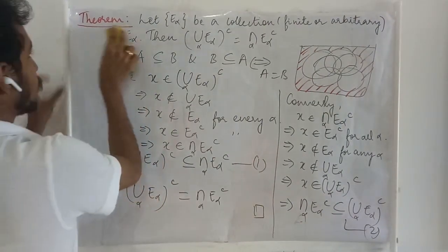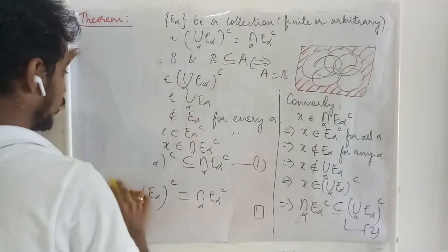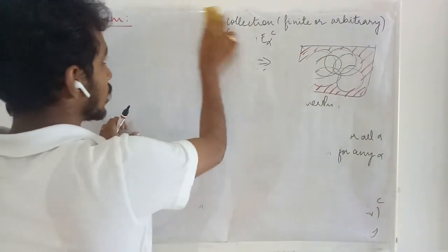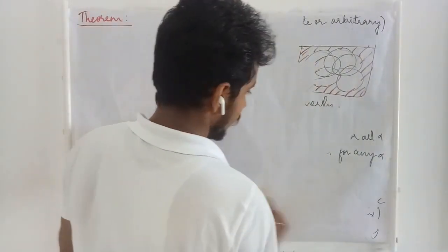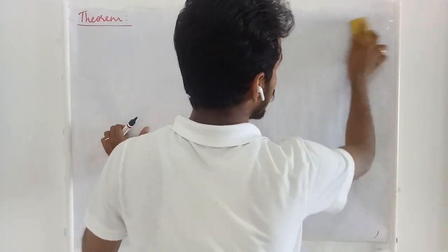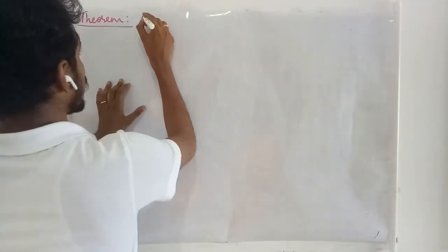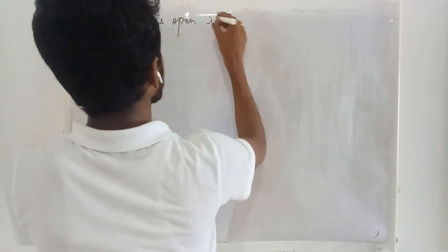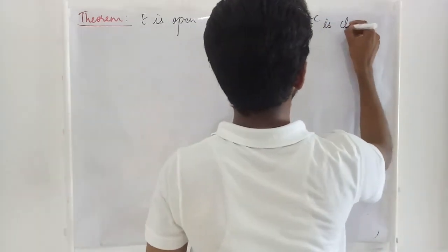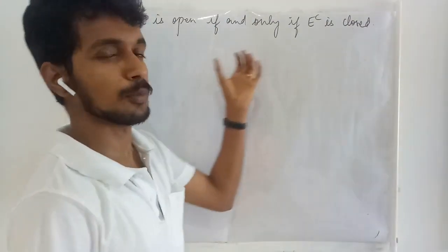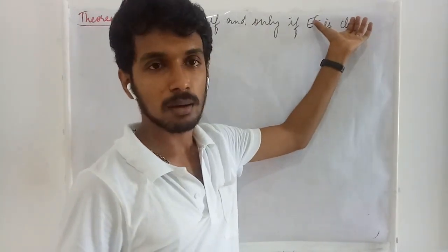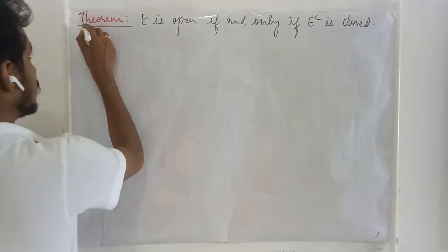Now we are going to prove the result I mentioned at the beginning of this lecture — the relation between a set and its complement. Whenever a set is open, its complement is going to be closed. We are going to prove formally: a set E is open if and only if its complement is closed. In this theorem we have to prove two directions: assuming E is open, prove E complement is closed, and assuming E complement is closed, prove E is open.